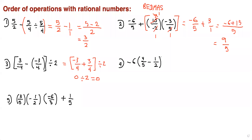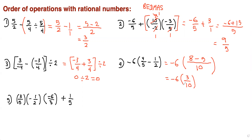This one: we do the brackets first. Inside the brackets we have negative 6 and we need common denominator, which is 10. 10 divided by 5 is 2, times 4 is 8; then minus, 10 divided by 2 is 5, times 1 is 5. That gives negative 6 times 8 minus 5 is 3, so 3 over 10. When multiplying a whole number by a fraction, see if you can reduce — 2 goes into 6 three times, 2 goes into 10 five times.